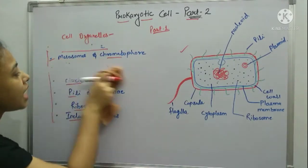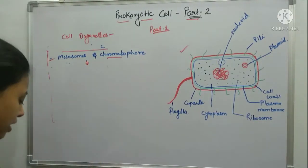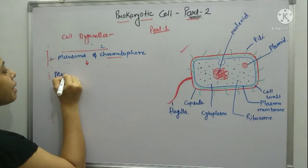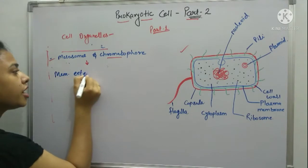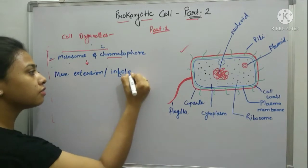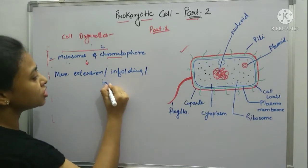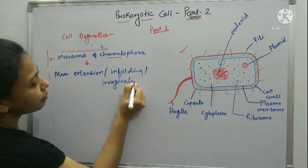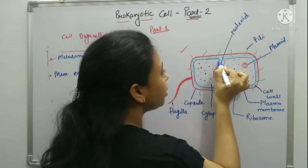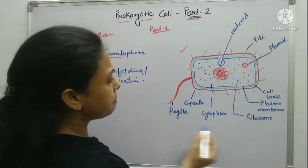Let us start with the next topic: mesosomes and chromatophore. Mesosomes are basically a membrane extension — you can say it is a membrane infolding or invagination. Basically, the plasma membrane gets infolded inside the cytoplasm, which is called the mesosome.